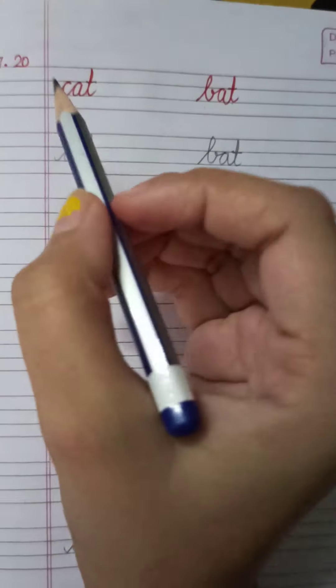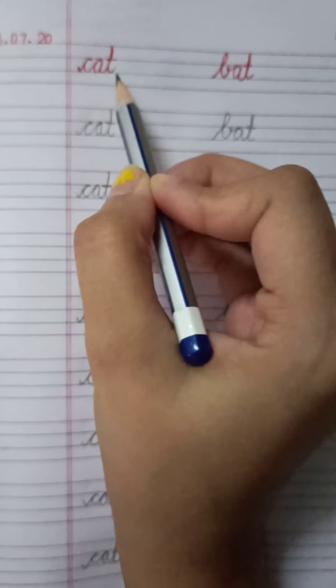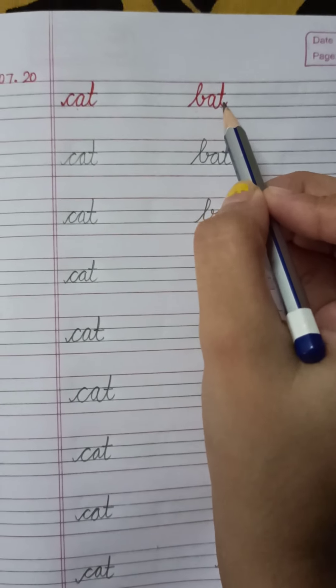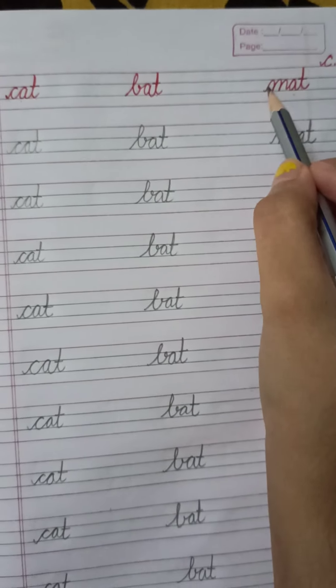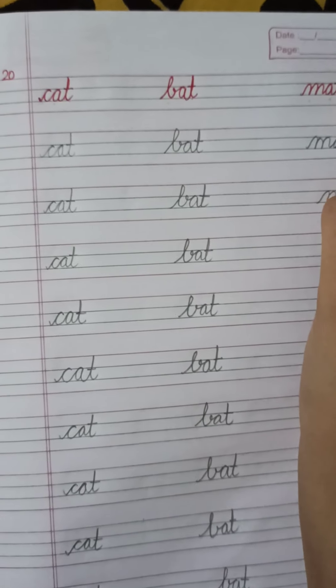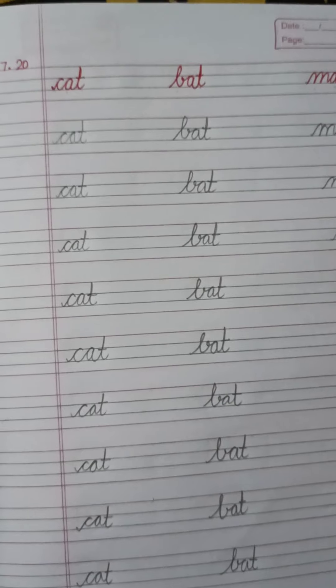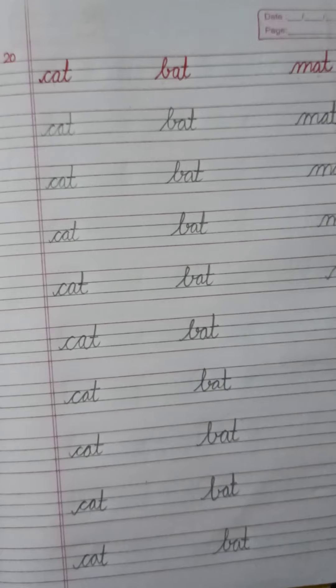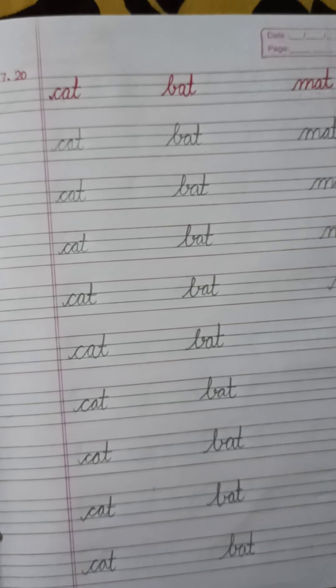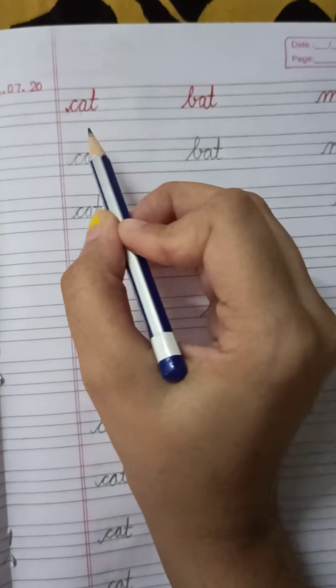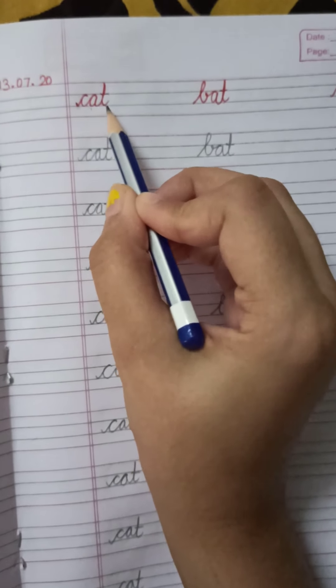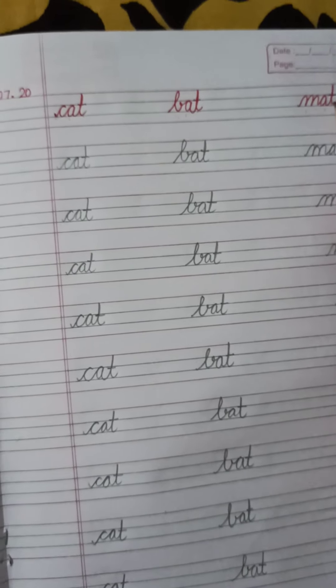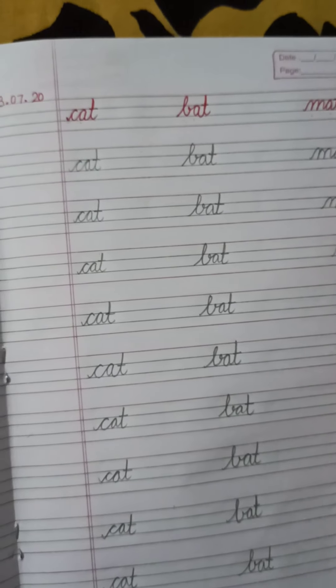So this is C-A-T-Cat, B-A-T-Bat, M-A-T-Mat. So we have learnt joining of three letter words of A sound. So my dear children, please write it down in your fair notebook and आपको ऐसे ही बोल के C-A-T-Cat, B-A-T-Bat, M-A-T-Mat. इसी तरह बोल के आपको अपनी notebook में लिखना है.